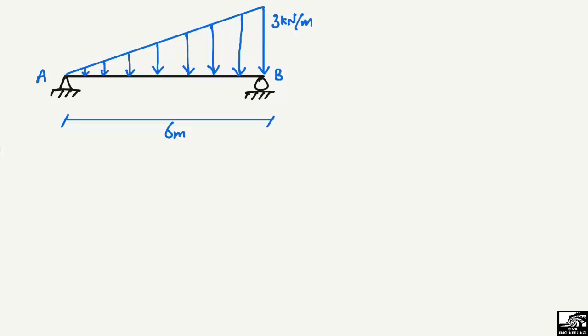This is a non-uniform load acting on this beam. The magnitude of the load increases from zero and increases to 3 kilonewton per meter to this end of the beam. This non-uniform load is distributed over a length of 6 meters.